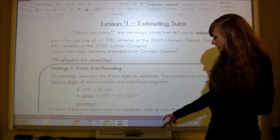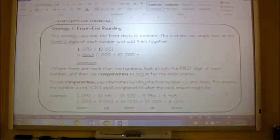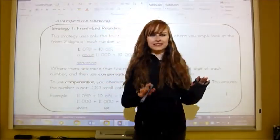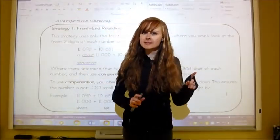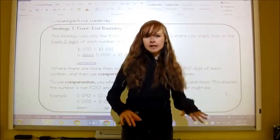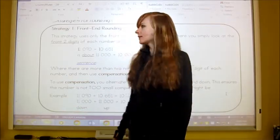One strategy that you can use is front-end rounding. When you do front-end rounding, all you do, and you're going to like this, is you just look at the front number, or the front digit on each number, and then just add those together and put everything else zeros. It's so simple. It's just not very accurate.